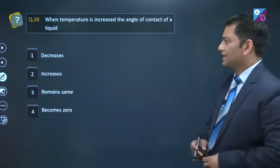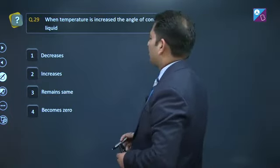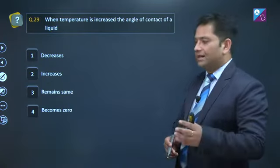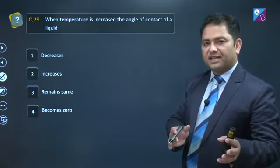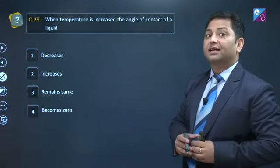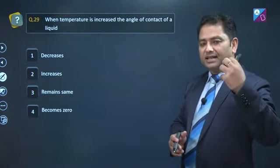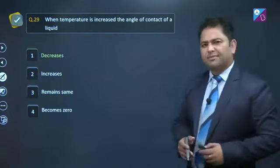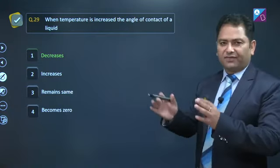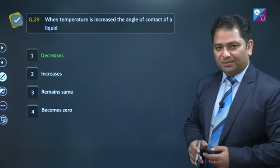Question number 29 ki aur badhte hain. When temperature is increased, the angle of contact of a liquid. Asal mein temperature badhane par the force of surface tension and cohesive force decreases. Aisa karne par adhesive effect badh jaata hai, yani pull badh jaata hai. Jis ke karan se angle of contact decreases. Vaise toh aam taur pe bachche is fact ko memorize hi karte hai. I just try to give a little bit of more explanation on that.